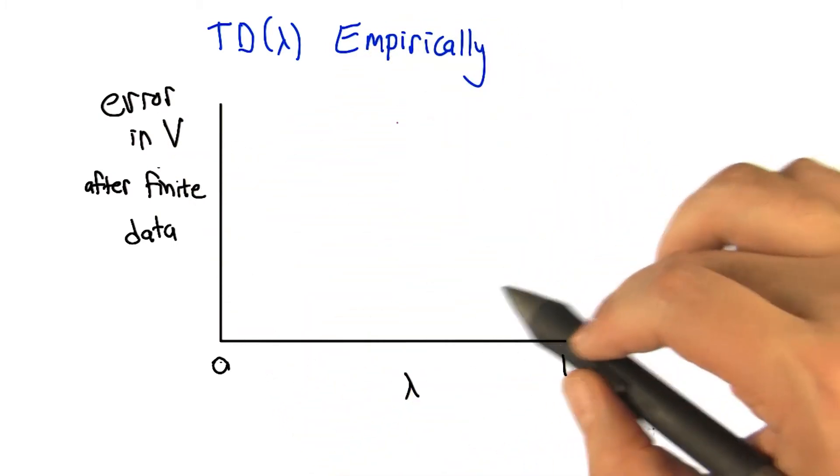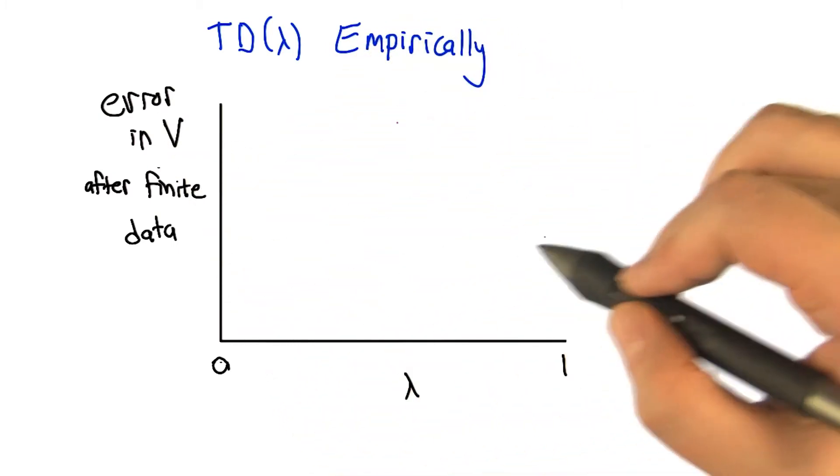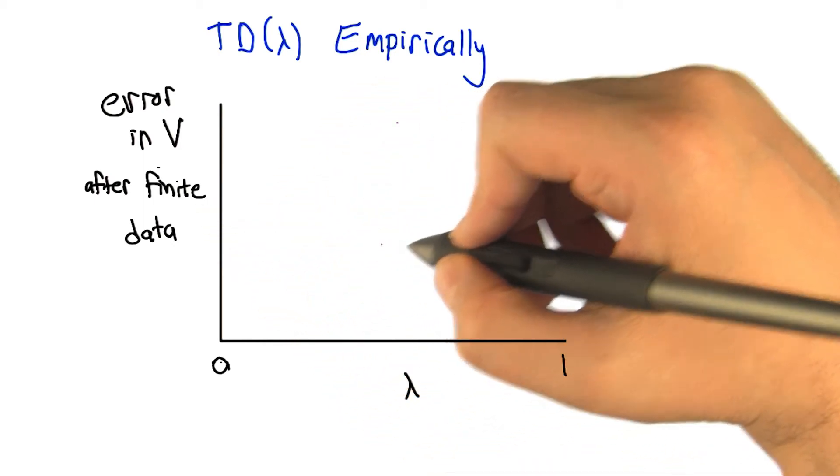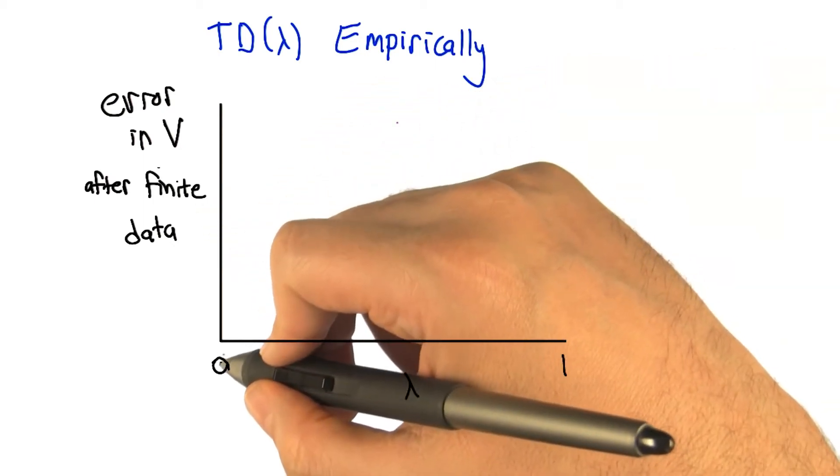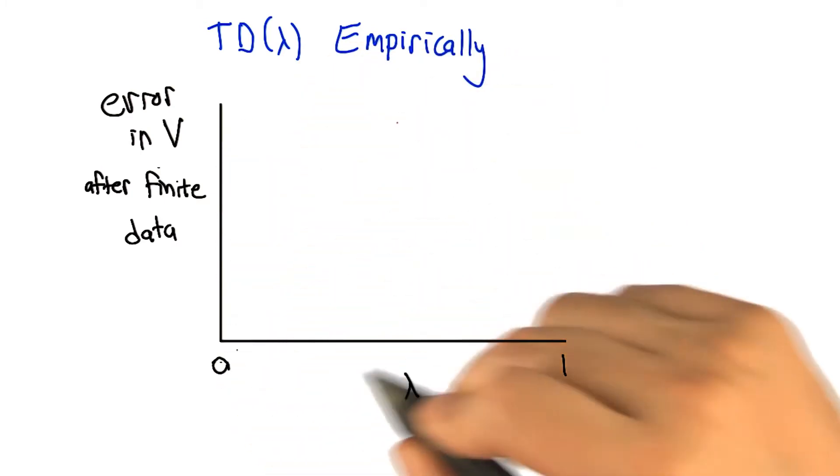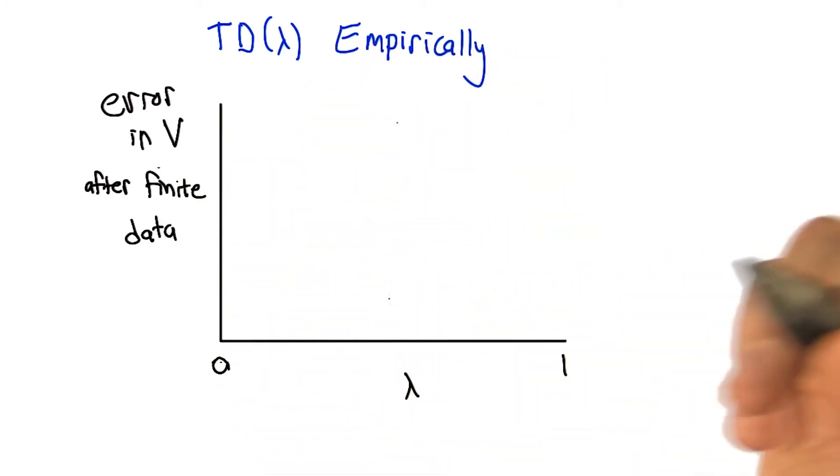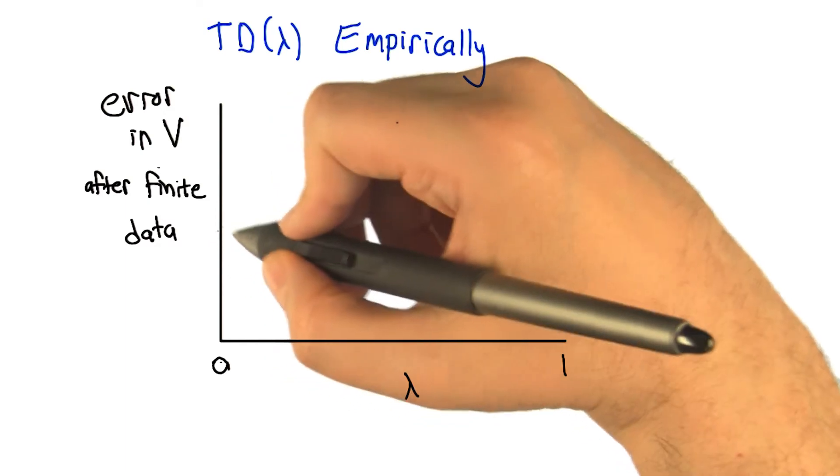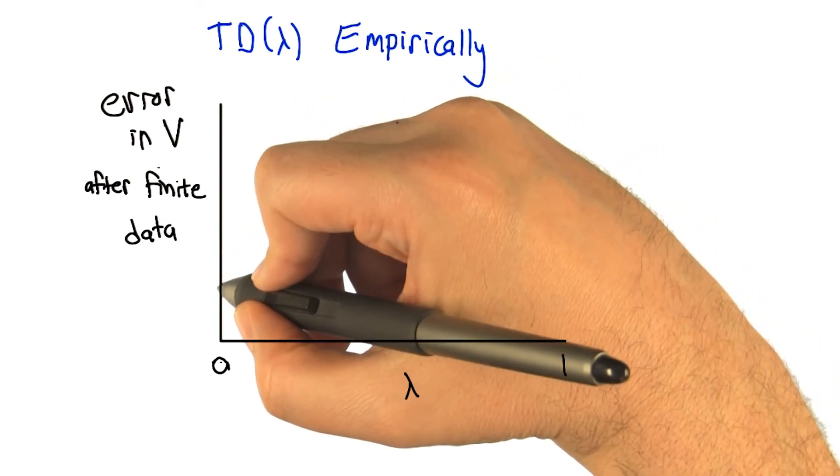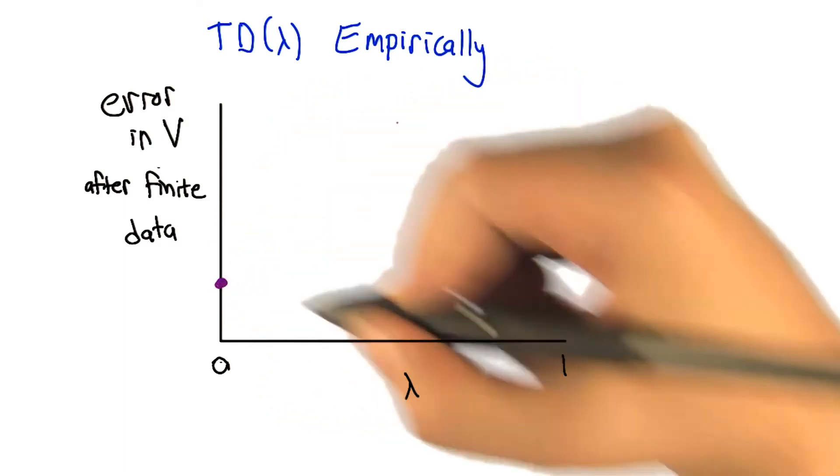All right, so let's see if we can figure out or maybe even guess what this might look like. So let's say if we use lambda equals zero, so we do TD zero. So after some finite amount of data, there's going to be some amount of error. Let's just call it that. Okay.